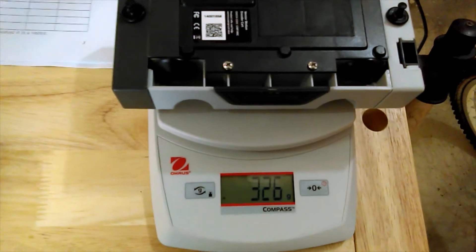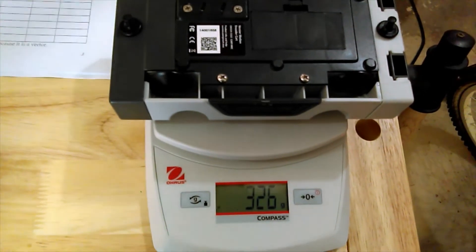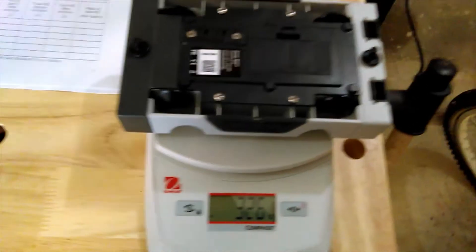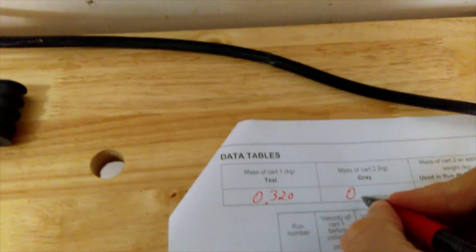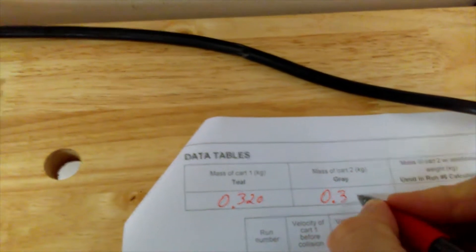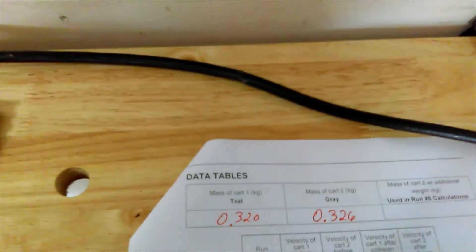Let's get the mass of number two. Car two is a little more massive, but they're pretty close and that's important in this experiment. 326 grams, so 0.326 kilograms.